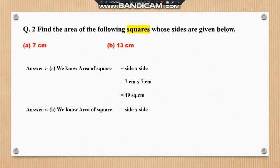Question B: side is 13 cm. Substituting the values, 13 cm × 13 cm. After multiplying, the answer is 169 square centimetres. As already told, when dimensions are in centimetres, the unit is square centimetres.